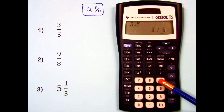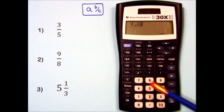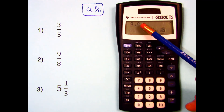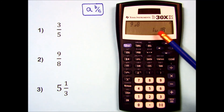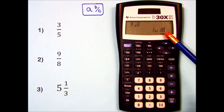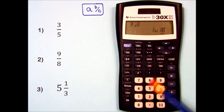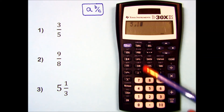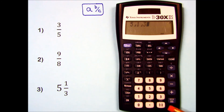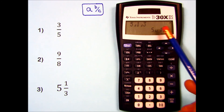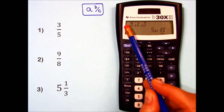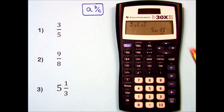Let's try number 2: 9, fraction key, 8. It maintains what I entered — the improper fraction — but it also reports the answer as 1 and 1/8, a mixed number format. And lastly, 5, fraction key, 1, fraction key, 3. When I press Enter I have 5 and 1/3, but it maintains what I had typed in up in the first line.